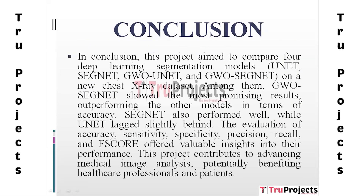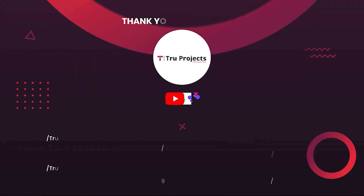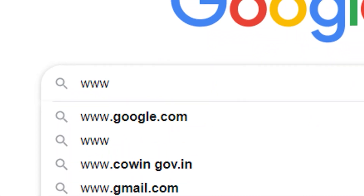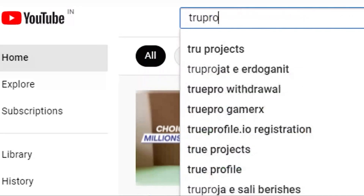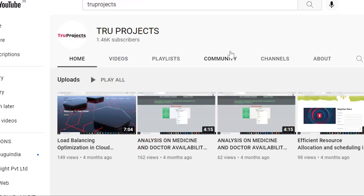The conclusion of this project is that it aimed to compare four deep learning segmentation models: UNet, SegNet, GWO-UNet, and GWO-SegNet on a chest X-ray dataset. Among them, GWO-SegNet displayed the most encouraging outcomes, outperforming the other models in terms of accuracy, while SegNet also did well and UNet lagged slightly. Performance was assessed using accuracy, sensitivity, specificity, precision, recall, and F-score. This project advances medical image analysis, which may help patients and healthcare workers. Thank you for watching — for more projects, please visit our website and subscribe to the True Projects YouTube channel.